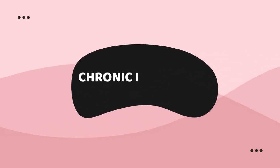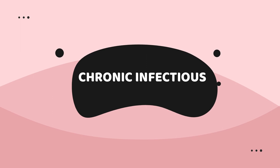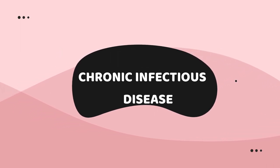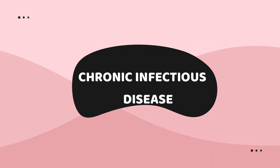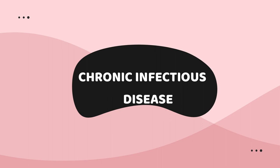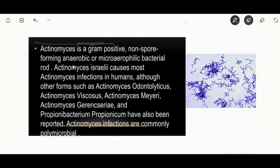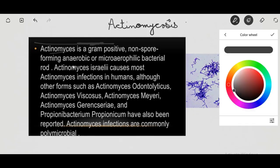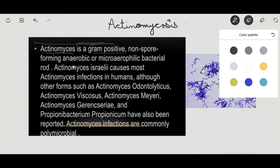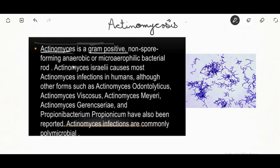Today we shall be discussing chronic infectious diseases, including actinomycosis, leprosy, syphilis, and eggs — all examples of chronic diseases. Actinomycosis is caused by Actinomyces israelii, an anaerobic gram-positive branching filamentous organism, also known as ray fungus.